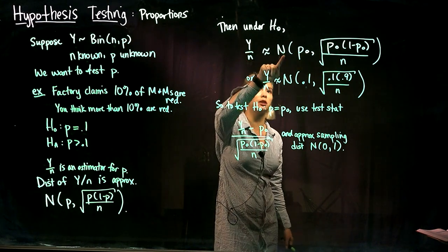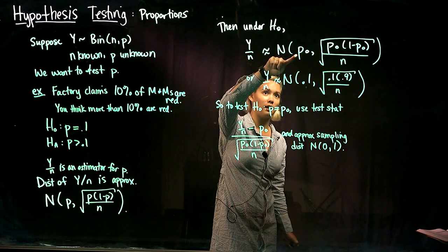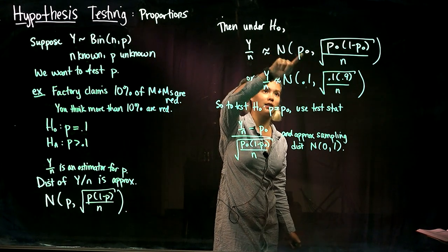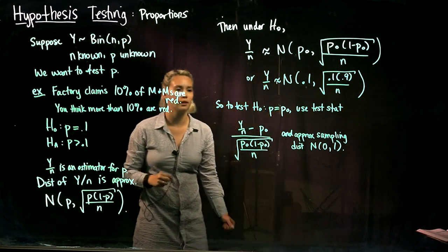So the sample proportion is approximately normally distributed with mean given by the null hypothesis, and the standard error is also given by the null hypothesis.